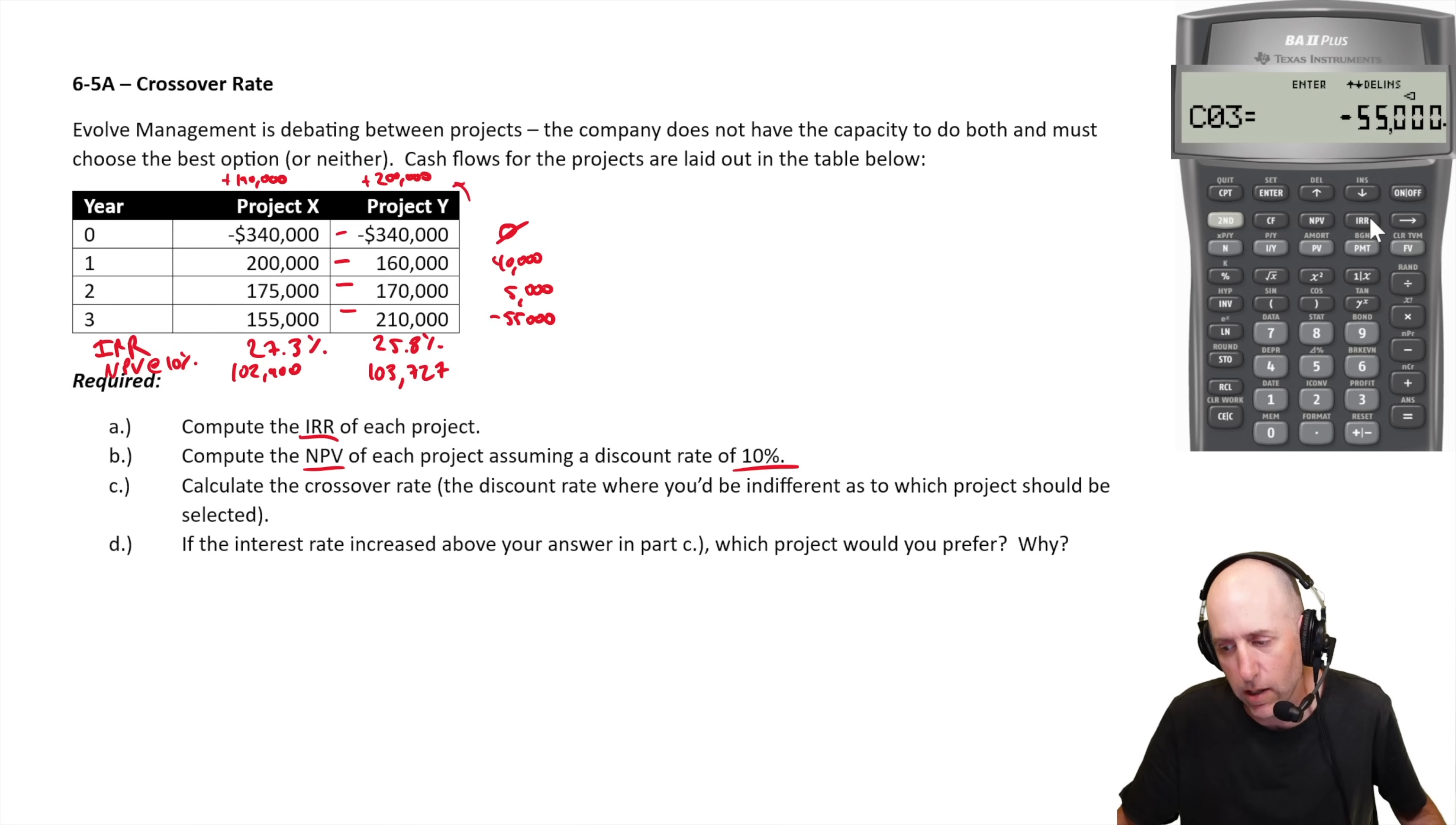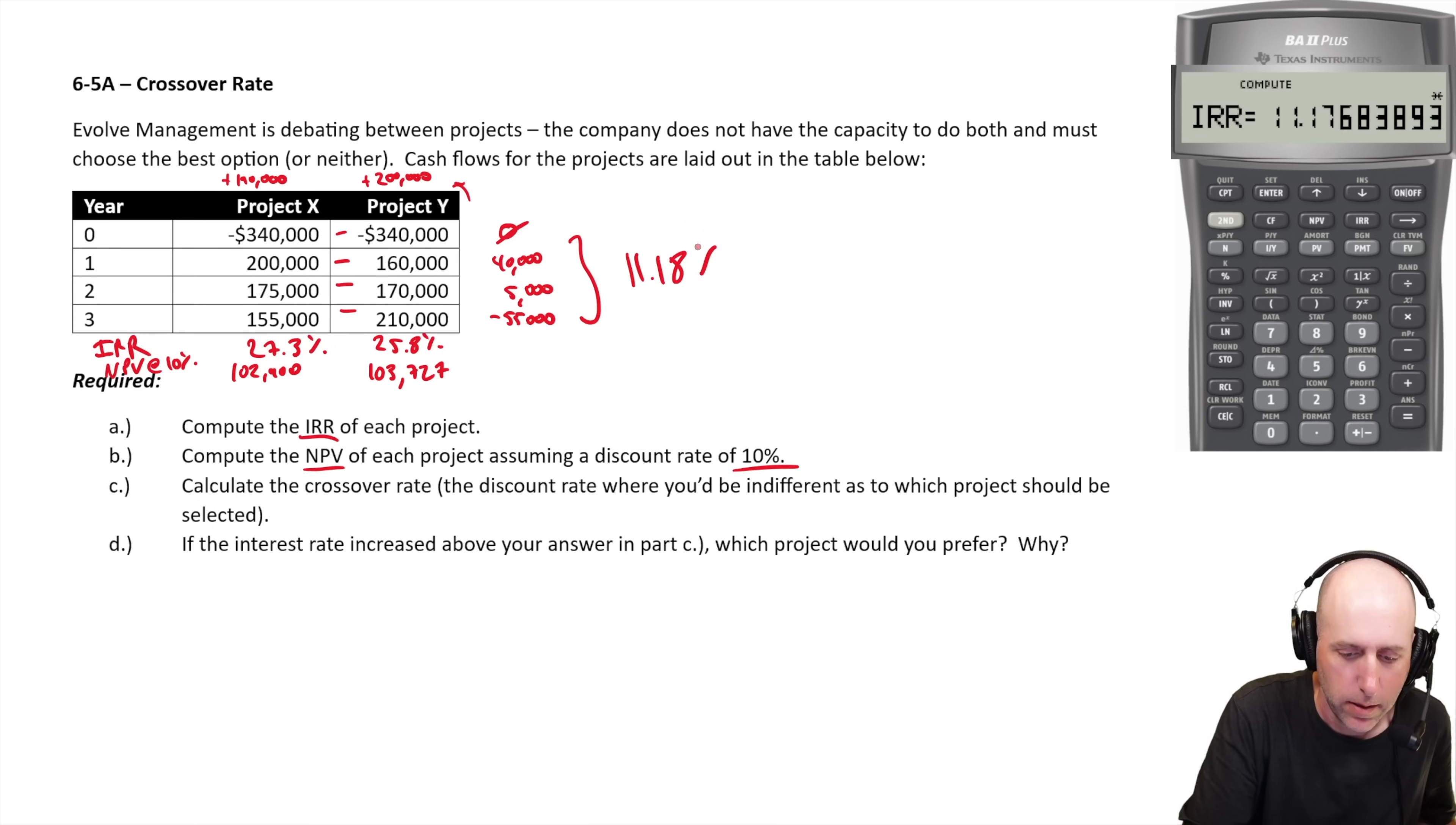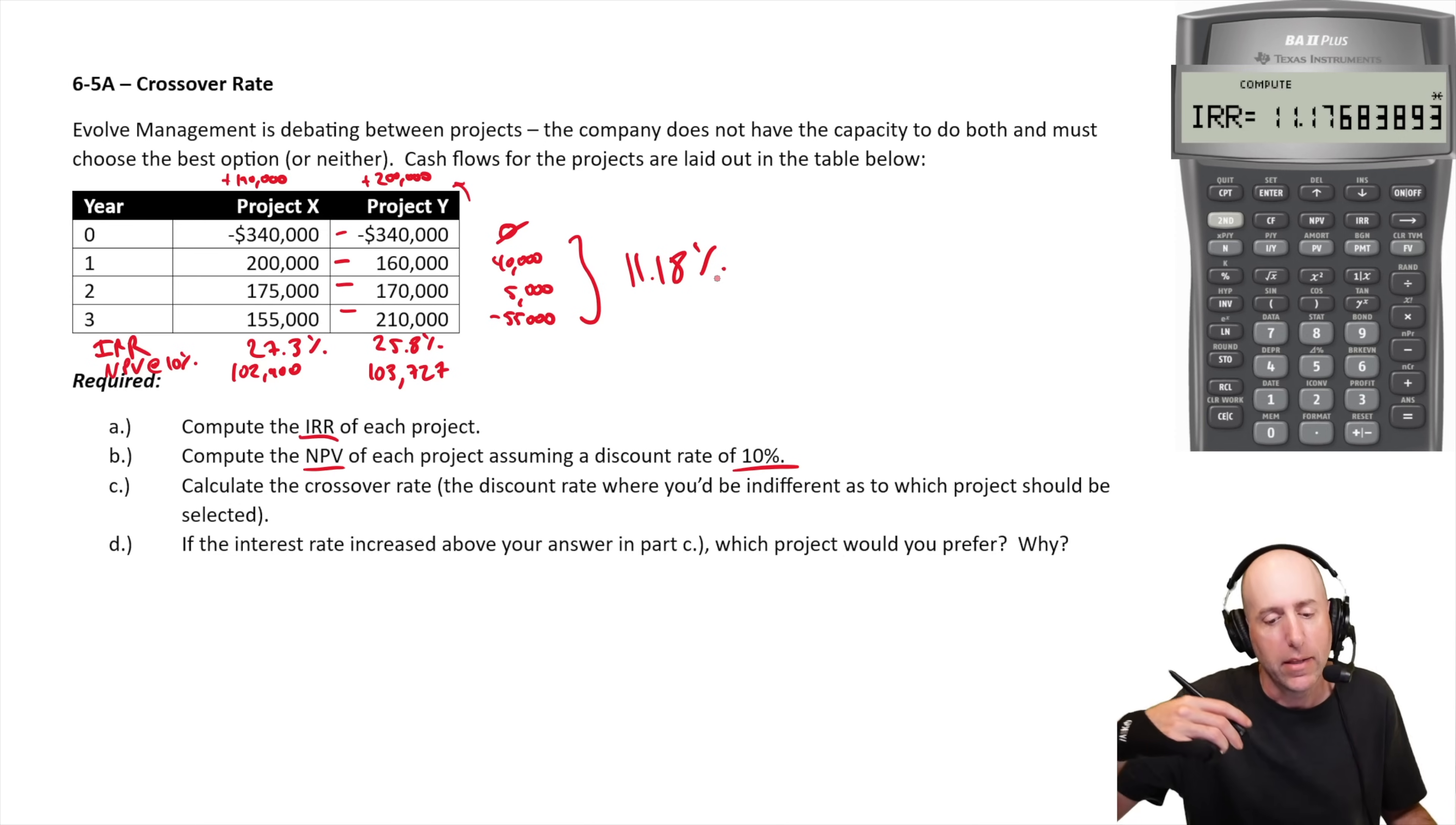And now I'm going to compute the IRR of those cash flows, those differences in cash flow. IRR compute. And it's 11.18%. That's the moment we cross over. That's the moment we go from preferring project Y, as we did for those first 10%. So we prefer project Y up to 11.18%. And then we cross over at 11.18%, we're indifferent. And once we're over 11.18%, we prefer project X. So that's the crossover rate, 11.18%.